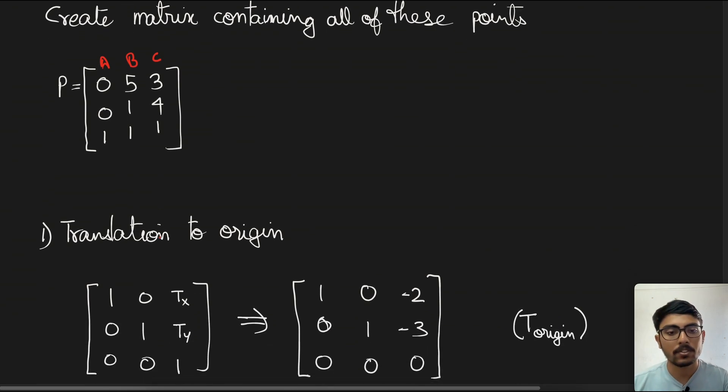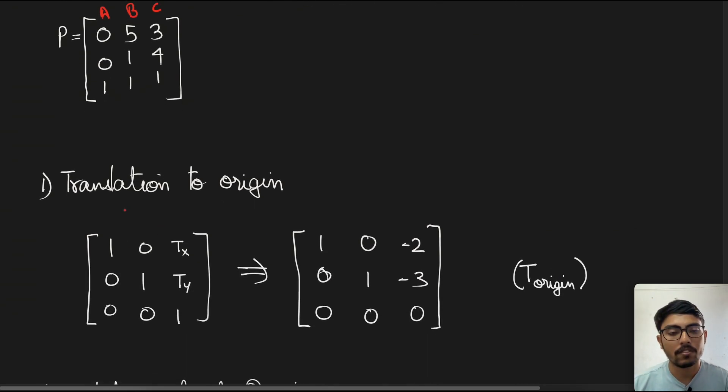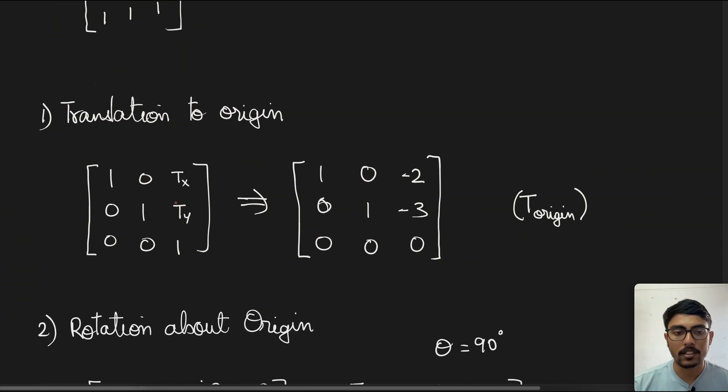Now we perform the first step, which is the translation to origin. We are making this because the point about which we are going to rotate is different from the origin and we have to make that translation. As you see, tx denotes the number of units we want to translate along the x-axis.